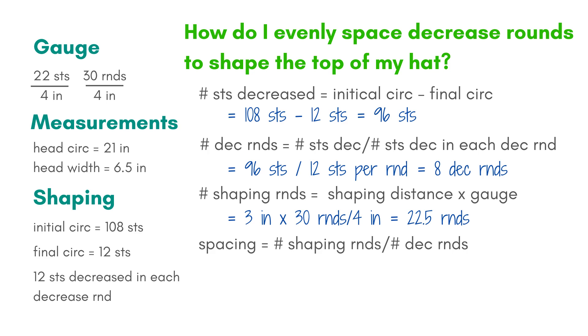The final piece of math is to calculate the spacing of the decrease rounds. It's just going to be the number of shaping rounds that we just solved for, divided by the number of decrease rounds that we have also already solved for. 22.5 total rounds divided by 8 decrease rounds gives us 2.8 total rounds for every 1 decrease round. Since we can't work partial rounds, I'm going to round that 2.8 up to 3.